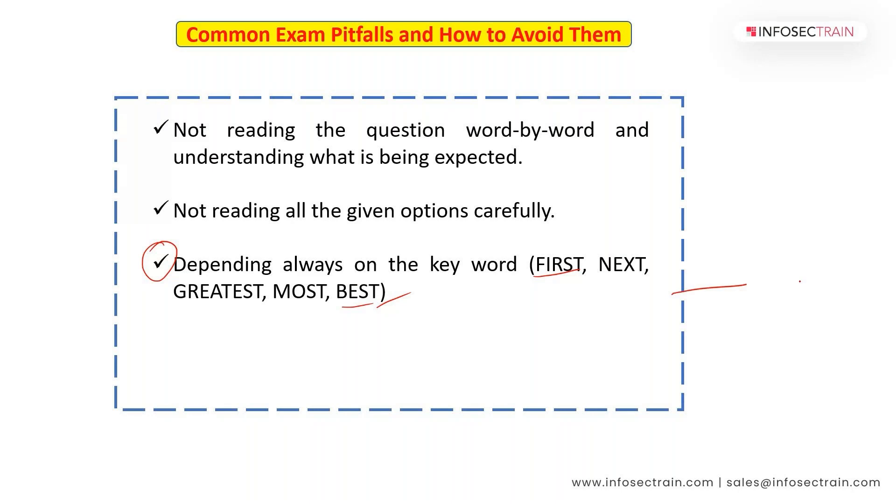There is always one word which is somewhere in the question that links you to choose the correct answer. When you see FIRST, NEXT, it's talking about sequence. GREATEST, MOST - very important, very core. It all depends on the scenario, the situation they have given you in the question. They can give you the whole auditing process scenario in one-liner question.